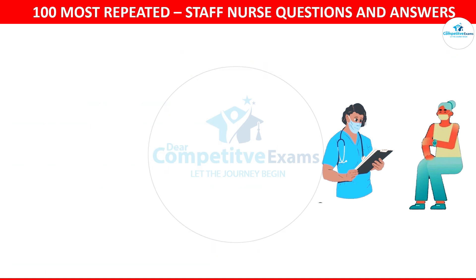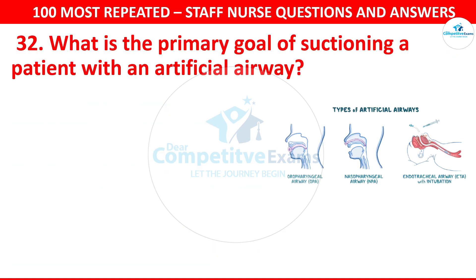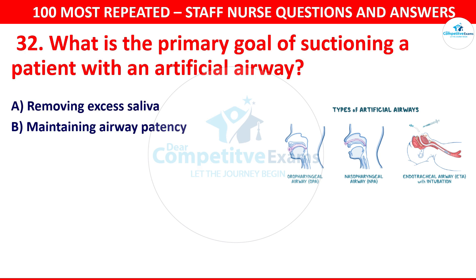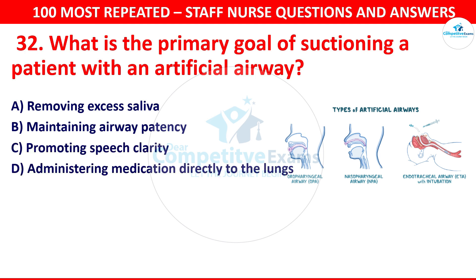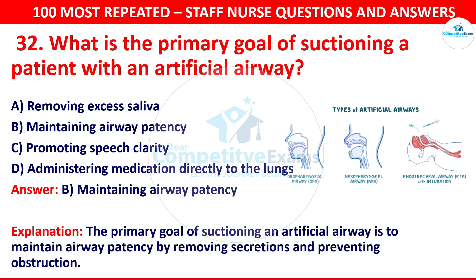Question number 32: What is the goal of suctioning a patient with an artificial airway? The options are removing excess saliva, maintaining airway patency, promoting speech clarity, or administering medication directly to the lungs. The correct answer is maintaining airway patency. The primary goal of suctioning an artificial airway is to maintain airway patency by removing secretions and preventing obstruction.